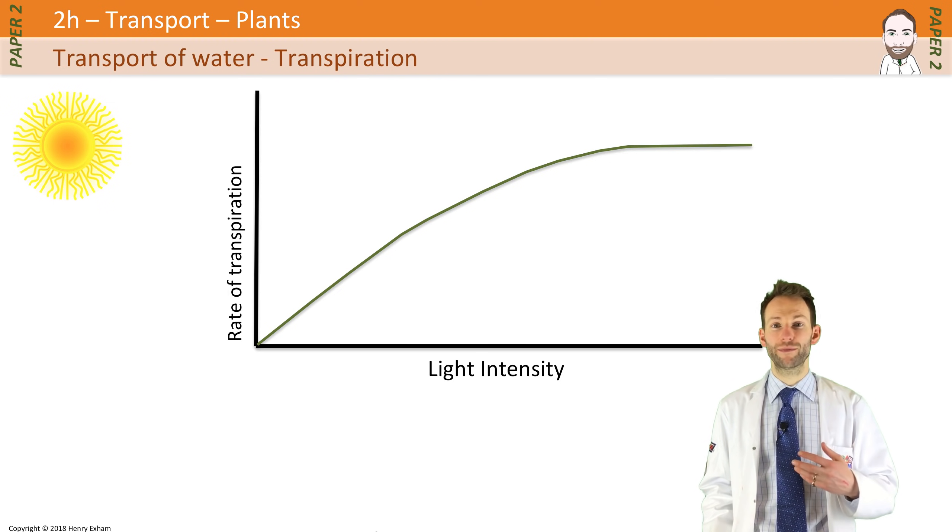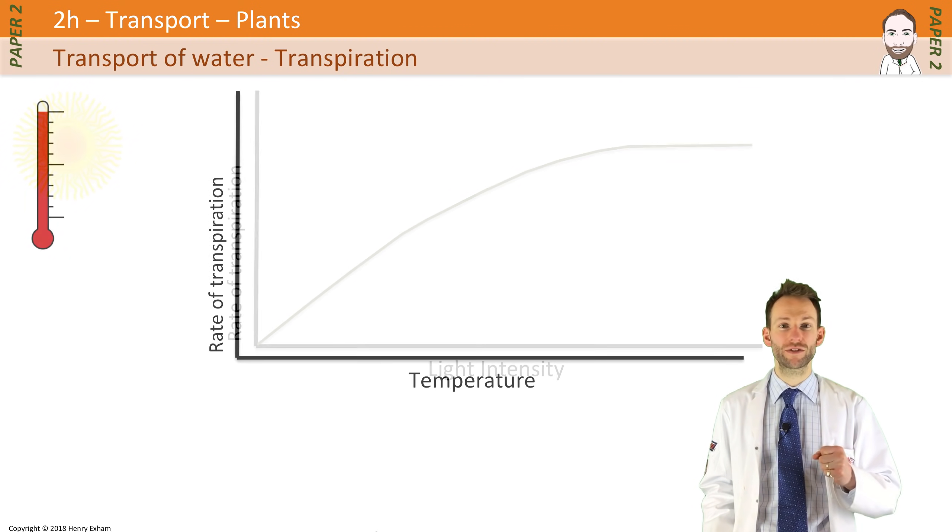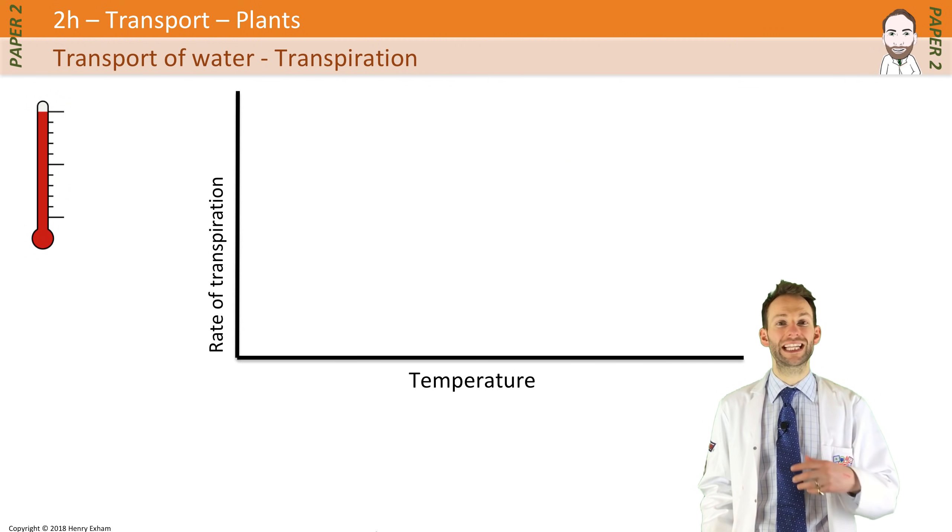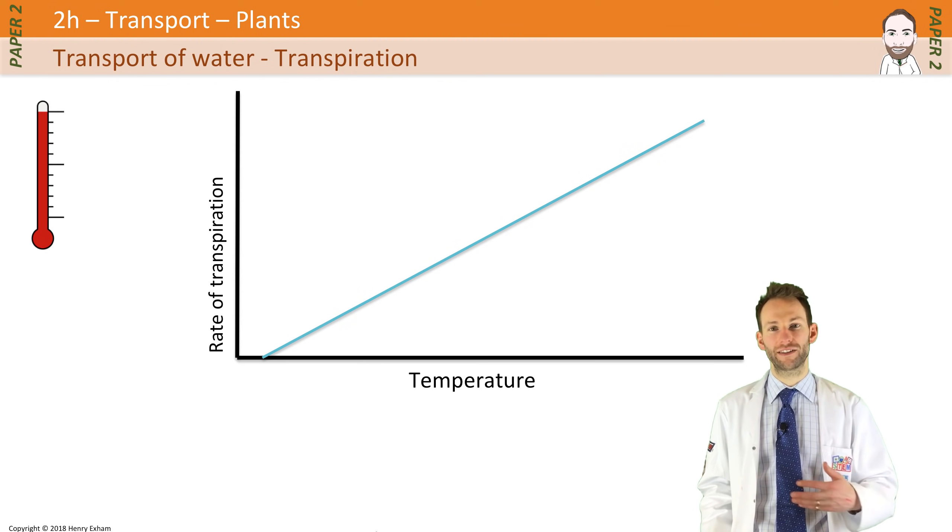So with temperature, the higher the temperature is, the faster the particles in the air move. They get more kinetic energy, they move around more. This is going to increase the rate of evaporation and diffusion from the leaf. So we're going to see a nice steady increase. As you increase temperature, you're going to increase the rate of transpiration.